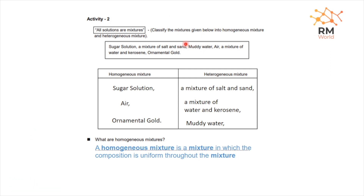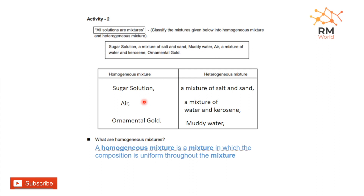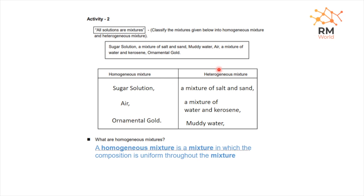We added the mixtures. For the form of a homogeneous mixture, that is a uniform mixture. This substitution is a heterogeneous mixture. A homogeneous mixture is a uniform mix. A homogeneous mixture includes sugar in water and ornamental gold, while a heterogeneous mixture includes salt and sand, and water and kerosene.